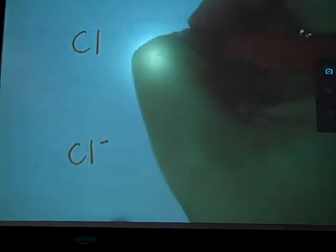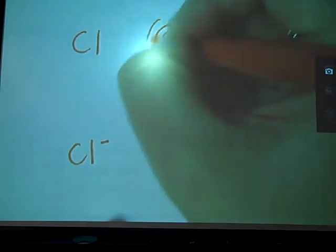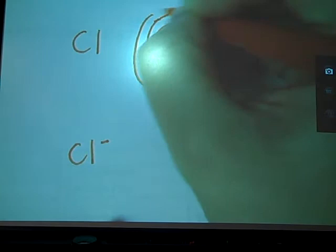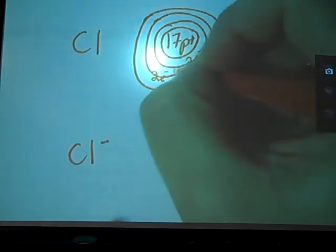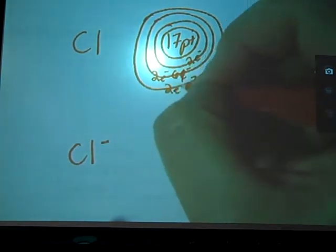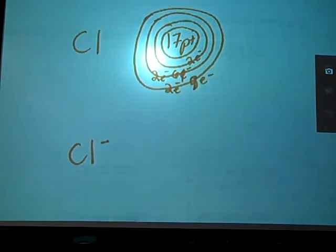If we were to talk about chlorine, for example. Chlorine and his ion. Chlorine has a 17 proton nucleus and three rings. So let's see, I have two electrons on the first ring, two in the S, six in the P on the second ring, and seven. Let's see, two electrons in the S and five in the P on that third ring.